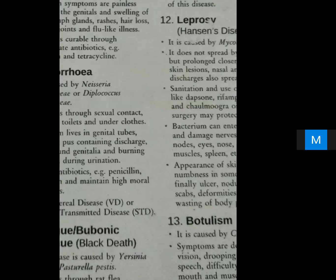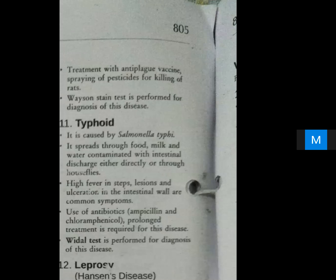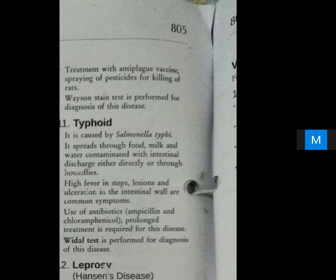In plague, hemorrhage and bleeding occur which turns black. Treatment includes anti-plague vaccine, spraying of pesticides for killing of rats, and a vaccine strain test is performed for diagnosis of this disease.